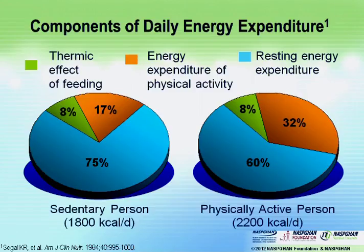It's important to keep in mind that whenever you see a child who is overweight, the first thing the family says is that they don't eat very much and they're very active. Unfortunately, we cannot change the laws of physics. The components of daily energy expenditure are fixed.